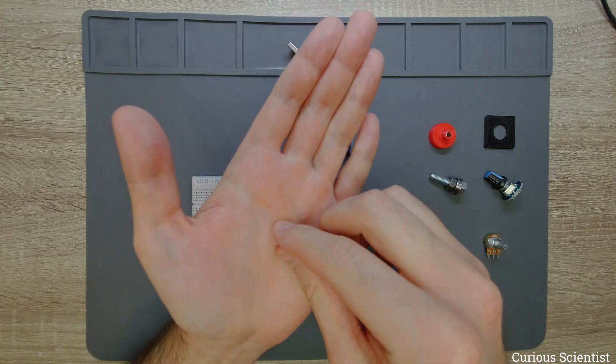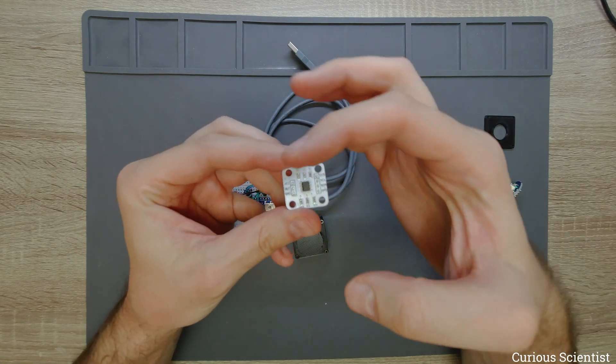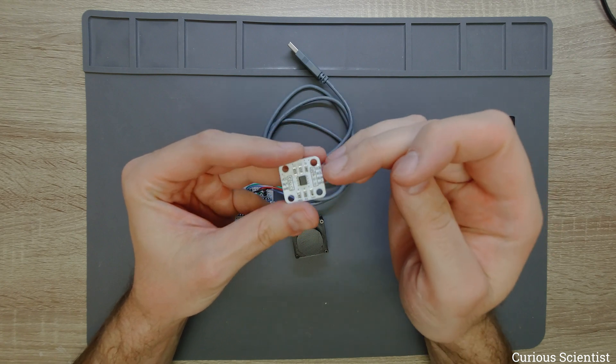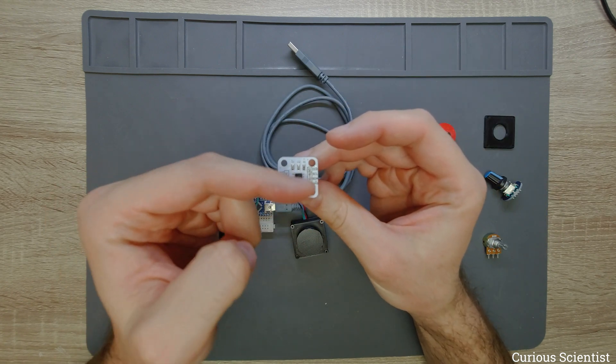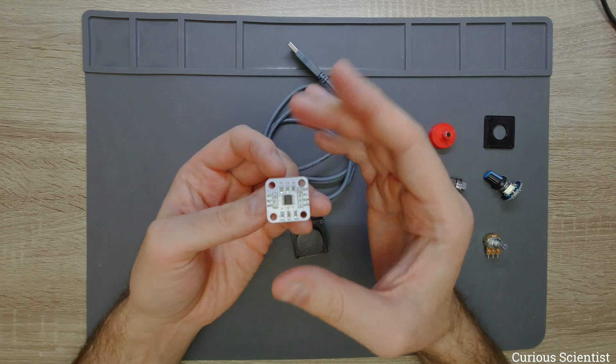So as you rotate this magnet about this chip, then the magnetic field will change about the four hall sensors, and based on the differences the chip can figure out the position of the magnet.